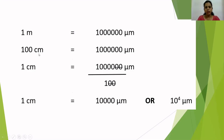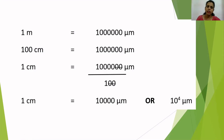Since one meter equals 10⁶ micrometers, and one meter contains 100 centimeters, we get: 100 centimeters = 10⁶ micrometers. Dividing both sides by 100 gives us 10,000, so one centimeter equals 10 to the power of 4 micrometers, or 10,000 micrometers. So 1 cm = 10⁴ µm.